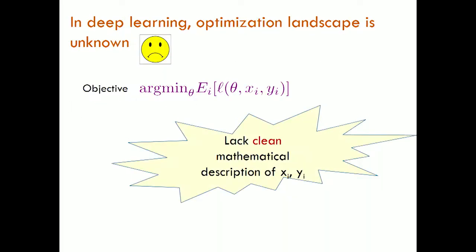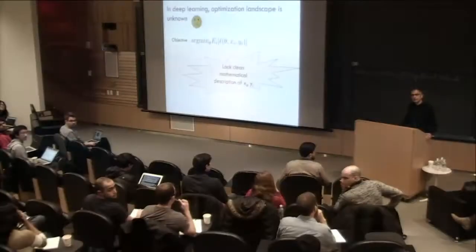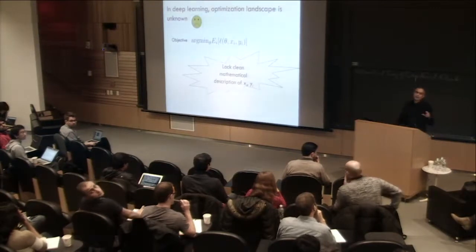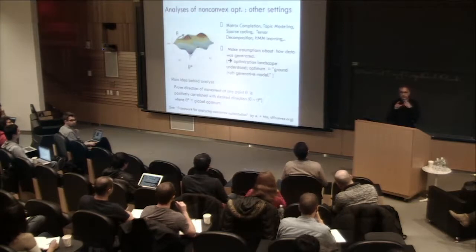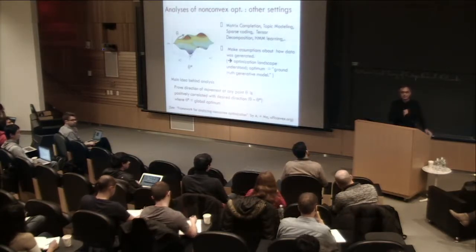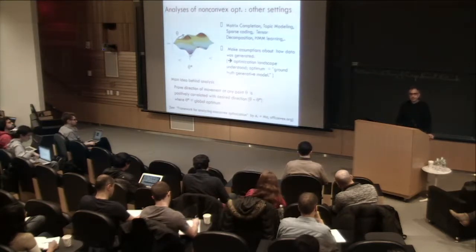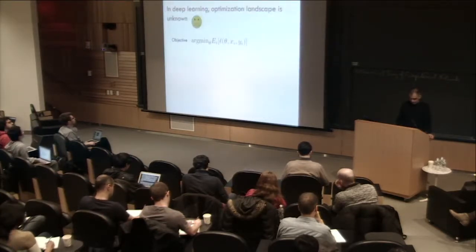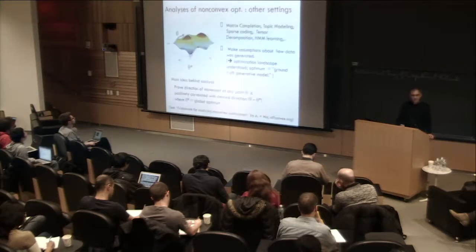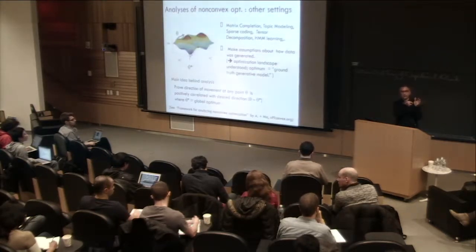Question: does the fact that the gradient is positively correlated with the true direction guarantee convergence? You have to quantify that — there are some coefficients α and β, so it has to move substantially correlated, not just correlated. And that guarantees global convergence. There's a fixed distance and you're always making some progress if you're positive.